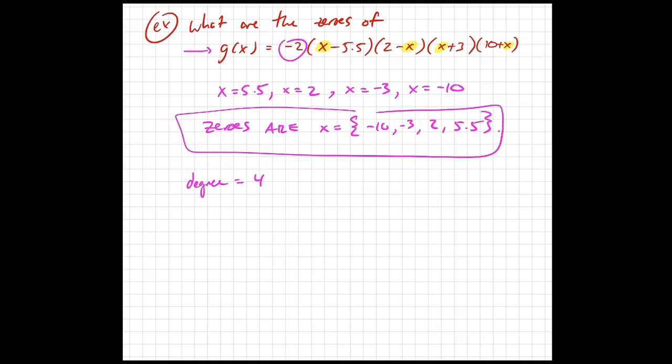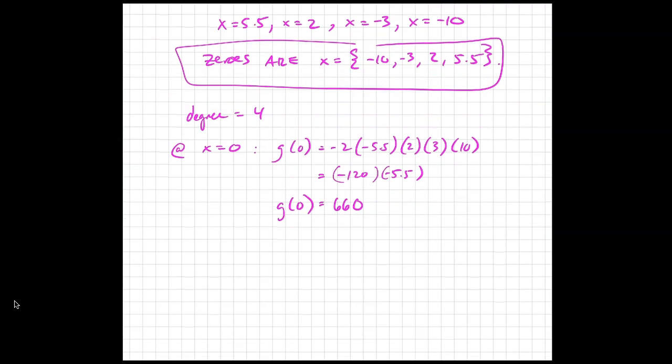And we also know that when x equals 0, g(0) is negative 2 times negative 5.5 times 2 minus 0 times 3 times 10. Right? And so, what is that? 4 times 30 is 120. So negative 120 times negative 5.5, which is positive 660. So we know g(0) is 660, and this is your vertical intercept.